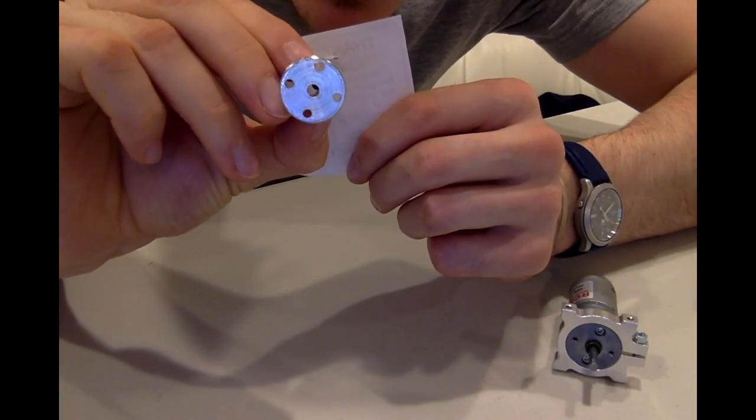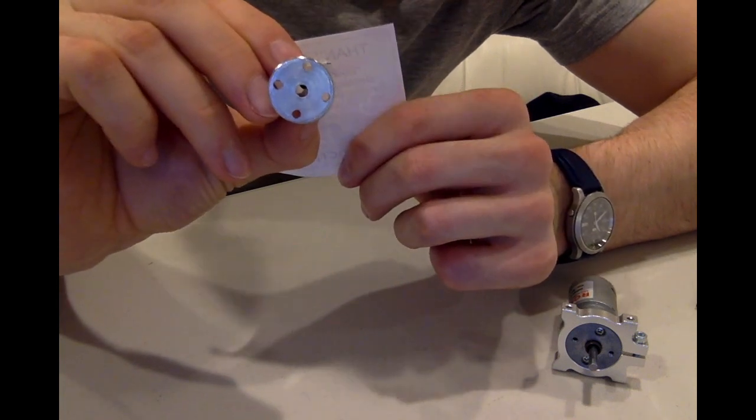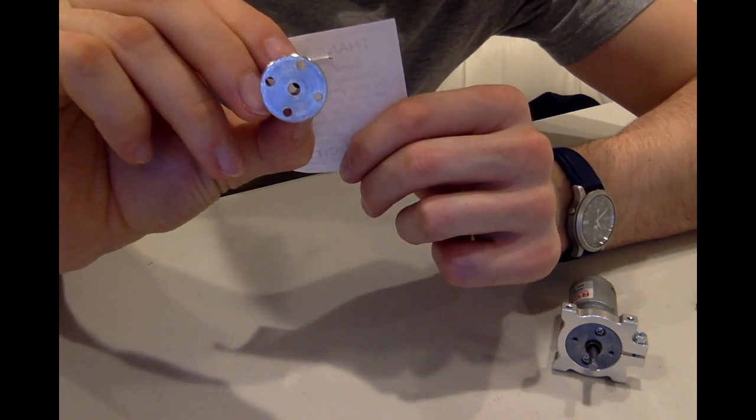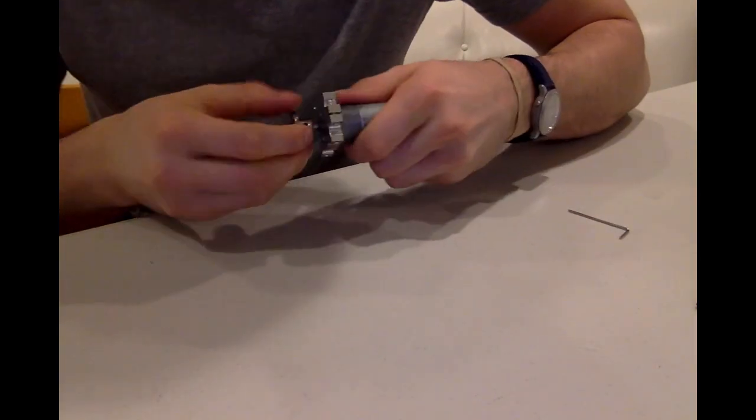You see that little nub? That is a screw that we can actually screw in and out. That's going to be applied to the flat side of that shaft, and we'll screw it in tight so that it's secure.